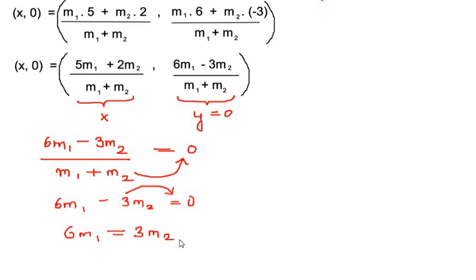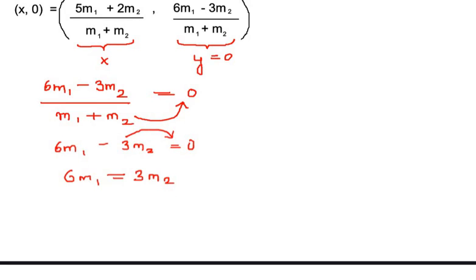And we have to find out the ratio of m₁ is to m₂. So we are going to divide on both sides by m₂. So we get m₁/m₂ on one side. Here the m₂ and m₂ divide each other.